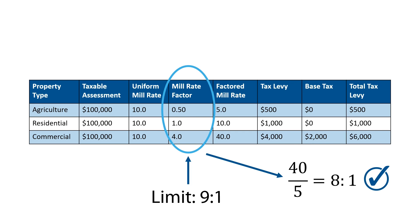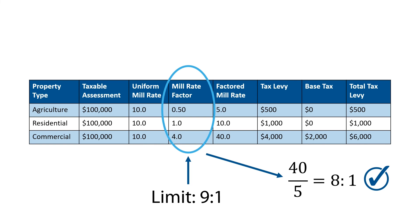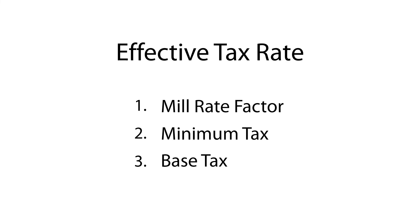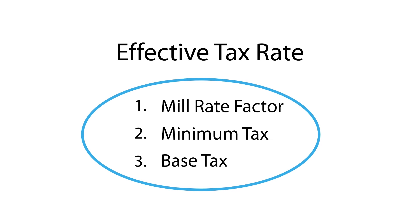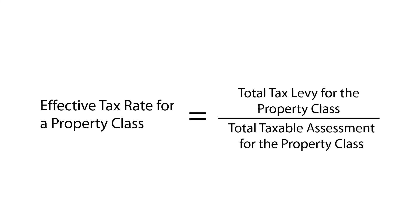The mill rate factor limit only considers the mill rate. In contrast, what's called an effective tax rate considers all three local tax tools. The effective tax rate is also referred to as the average tax rate. An effective tax rate is the total municipal property tax levy for a given property class or subclass, divided by the taxable assessment for that property class or subclass within a municipality, after all tax tools — such as mill rate factors, base tax, and minimum tax — are considered.